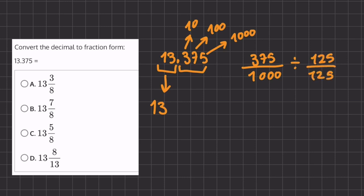And 375 divided by 125 will be 3. And 1,000 divided by 125 will give us 8.